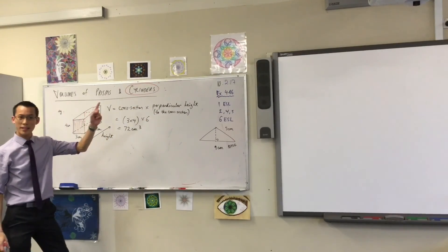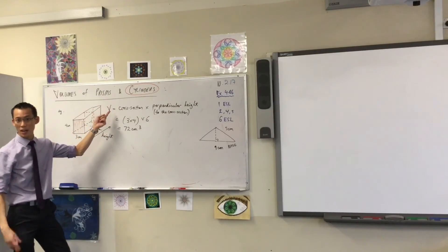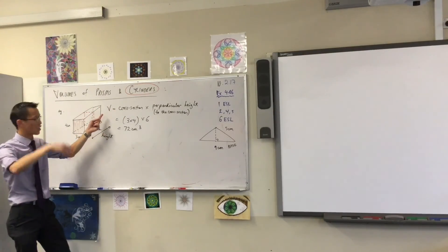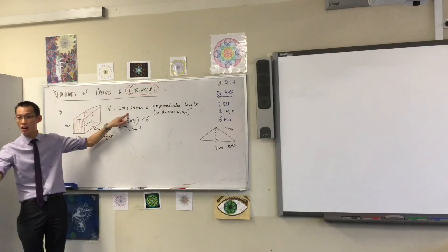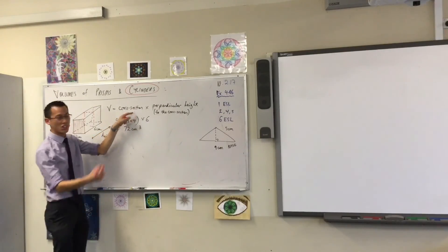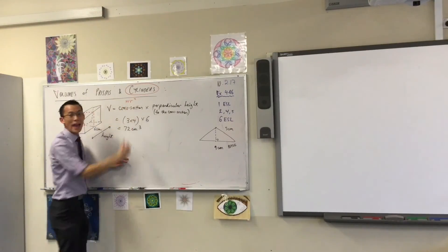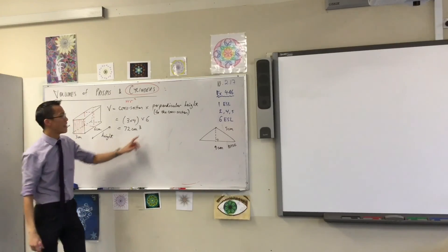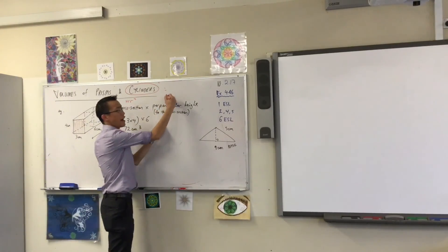Because a cylinder, like a prism, has a consistent cross section. It's just that the cross section happens to be a circle. So your cross section, you put like, you don't need to write this, but you put a pi r squared there, and then you multiply by the perpendicular height.